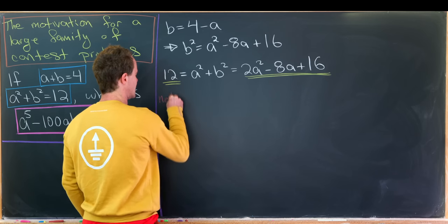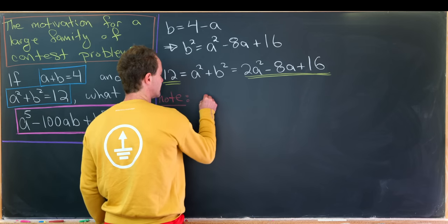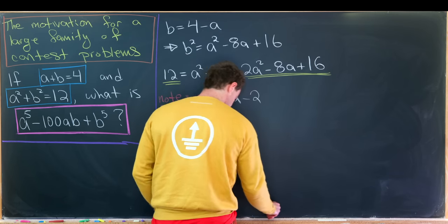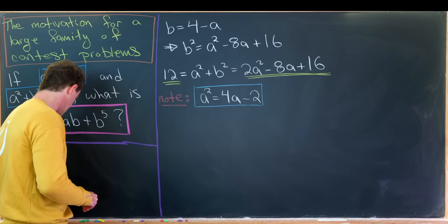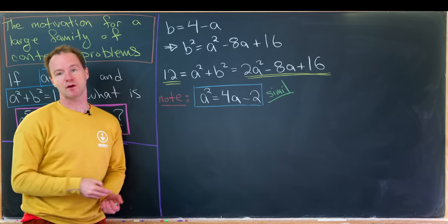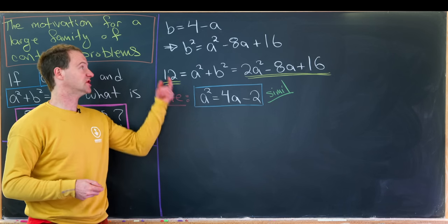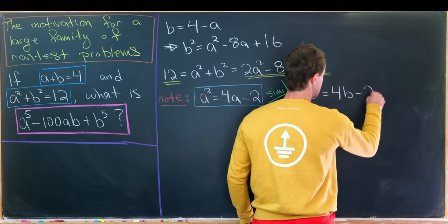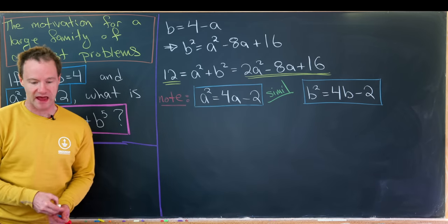We note that a squared equals 4a minus 2. Let's put a nice box around that because it'll be useful as we move forward. Similarly, b satisfies the same equation — that's really because a and b are playing symmetric roles here, though you could work out from scratch using similar steps to get b squared equals 4b minus 2. So we've got these nice power-reducing formulas for a and b.